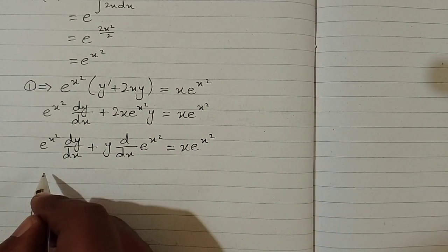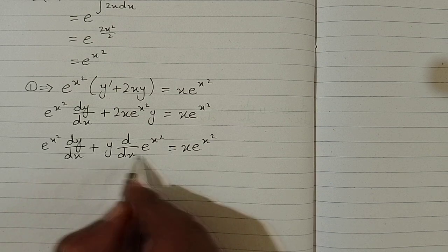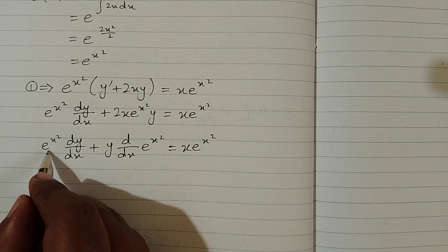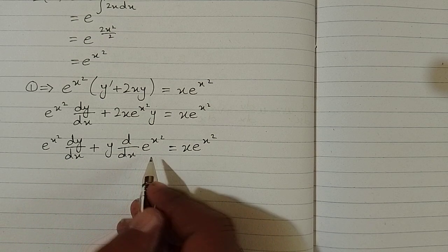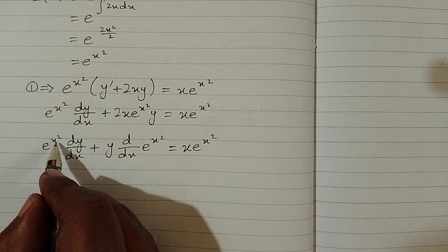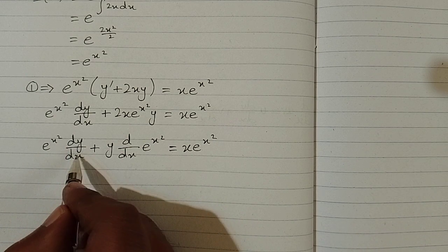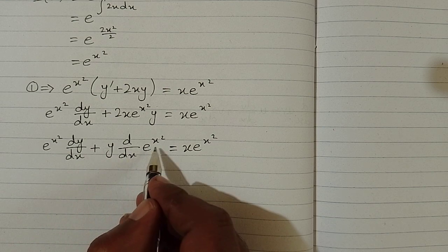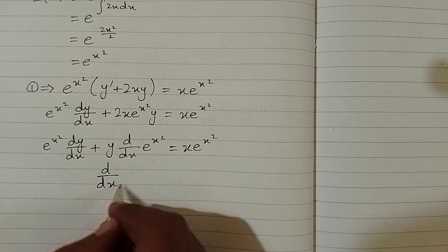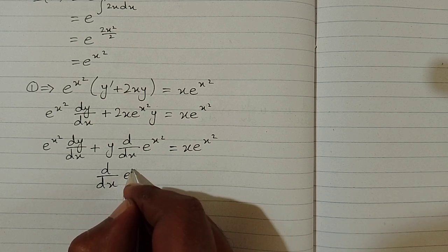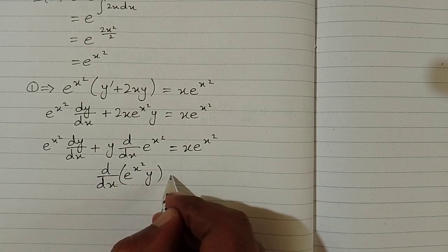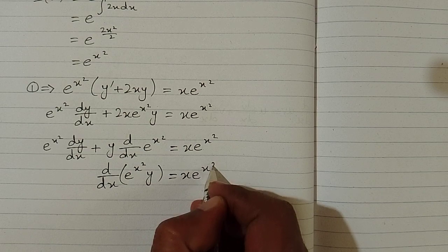We can apply the product rule of differentiation: u·(dv/dx) + v·(du/dx) = d/dx(uv). So e^(x²)·(dy/dx) + y·(d/dx of e^(x²)) allows us to write d/dx[e^(x²)·y] = x·e^(x²).